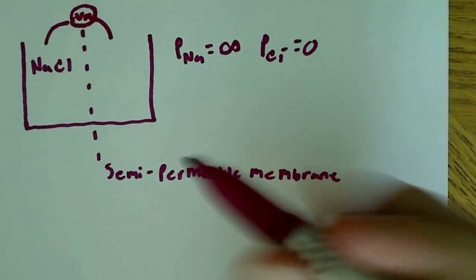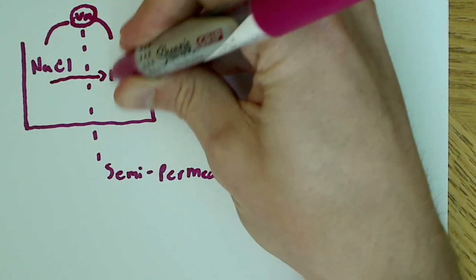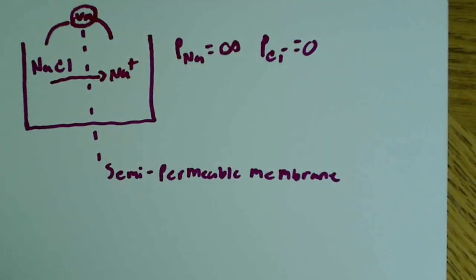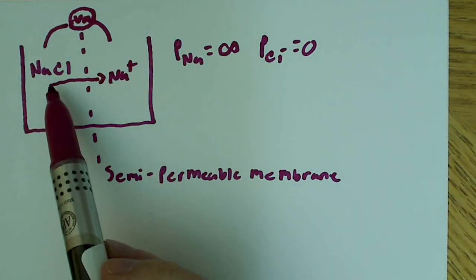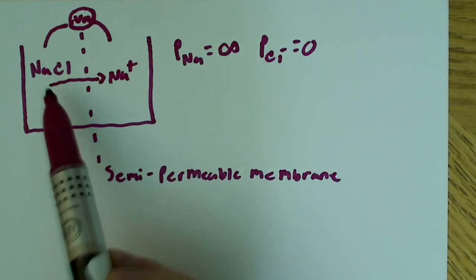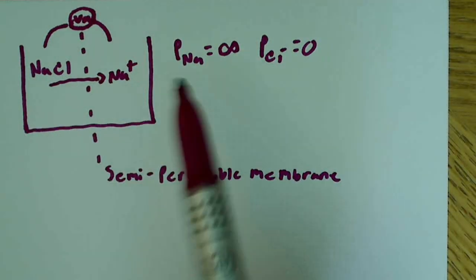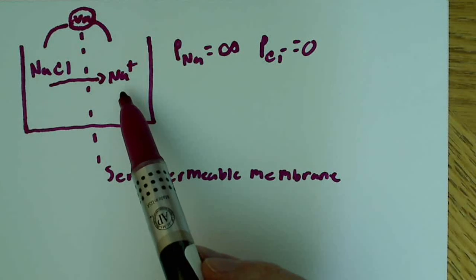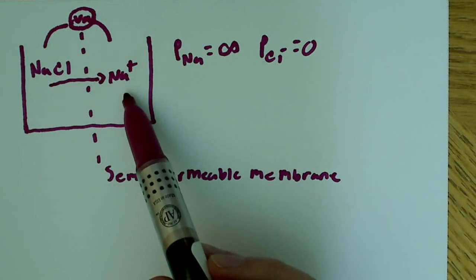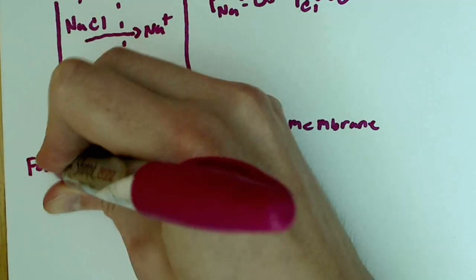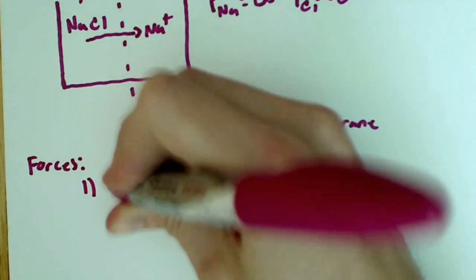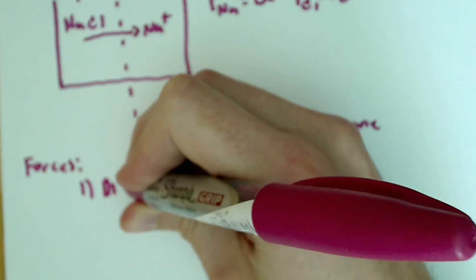So what's going to happen is the Na+, or sodium ions, are going to move over and cross the membrane. This is just simple diffusion. And diffusion basically just says that if I have a higher concentration over here, things tend to move from higher concentrations to lower concentrations. So that's the first force. We might call that diffusion.